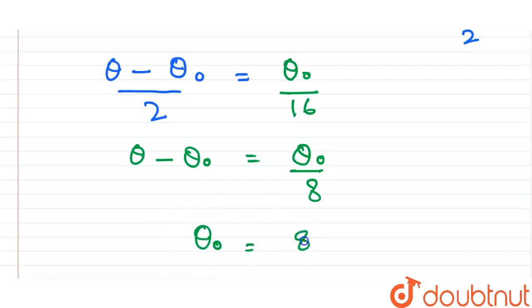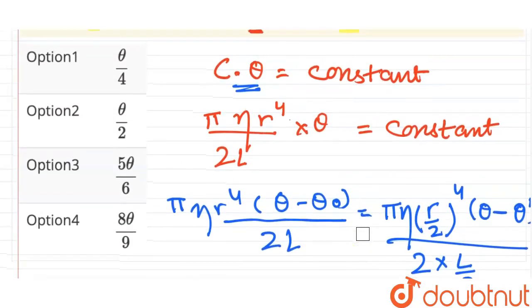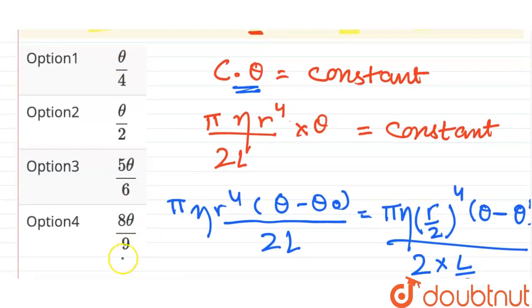Alright, 8/9 theta. So our answer is theta naught will be equal to 8/9 theta, that is option 4. So option 4 is the correct answer. That's all, thank you.